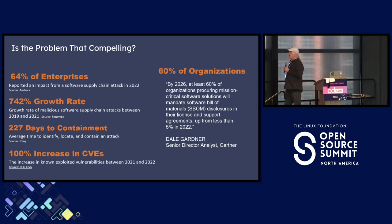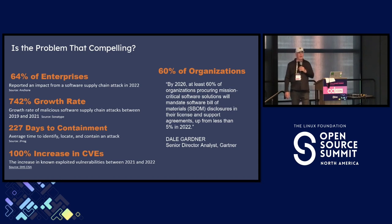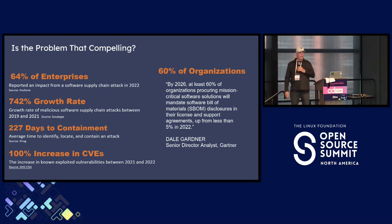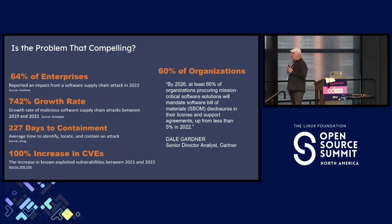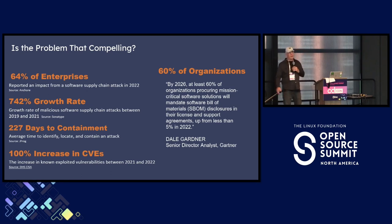Some stats: 64% of companies out there have been attacked on the supply chain side, with a huge growth rate in that attack point — focus mainly on the supply chain. Like Tracy said, from the JFrog report: 227 days. Obviously a 100% increase in CVEs. I think the CVE part is because we're actually looking for them now.